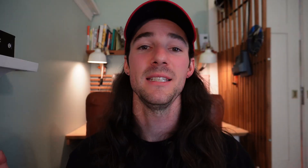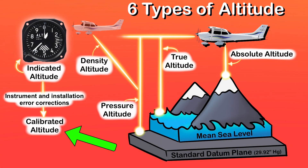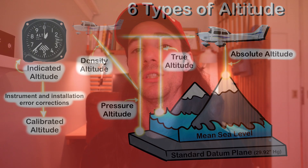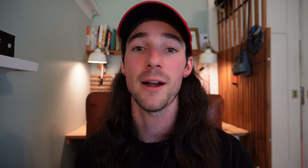Altitude number six is calibrated altitude, which is your indicated altitude corrected for instrument and installation errors. In most general aviation aircraft, calibrated altitude will be almost the same as indicated altitude.